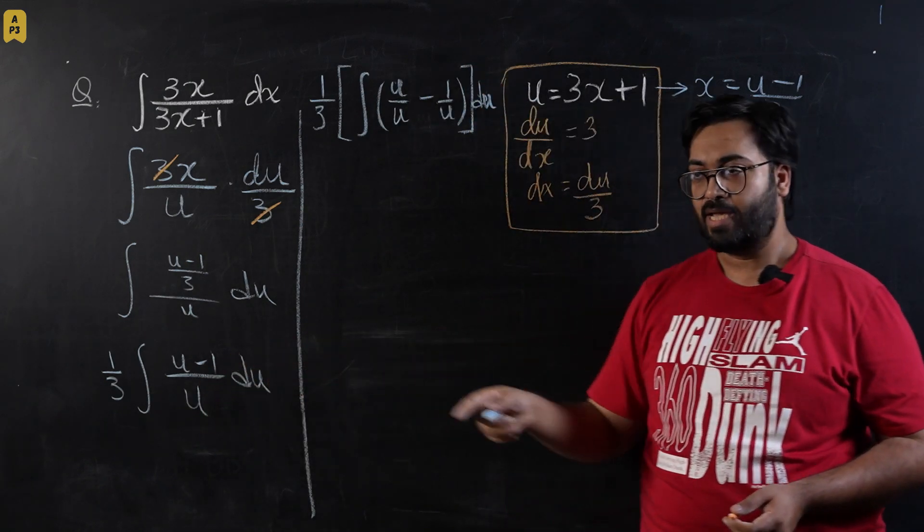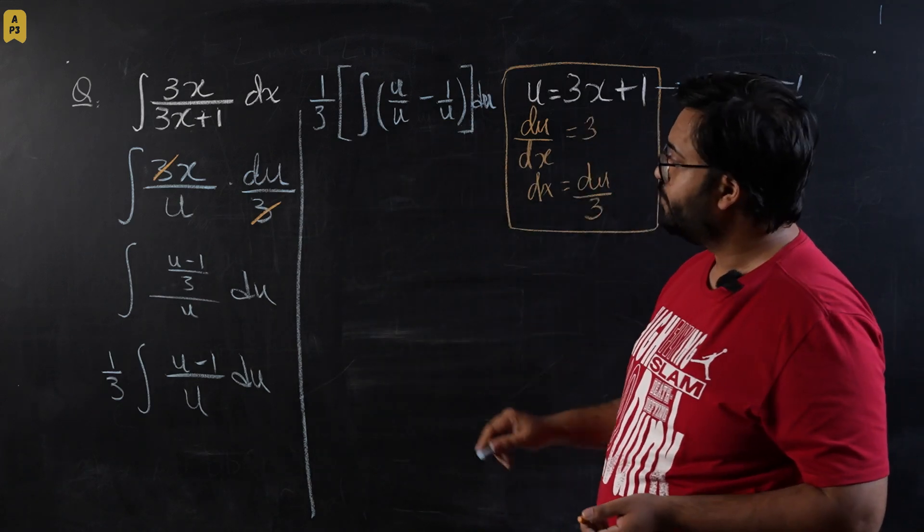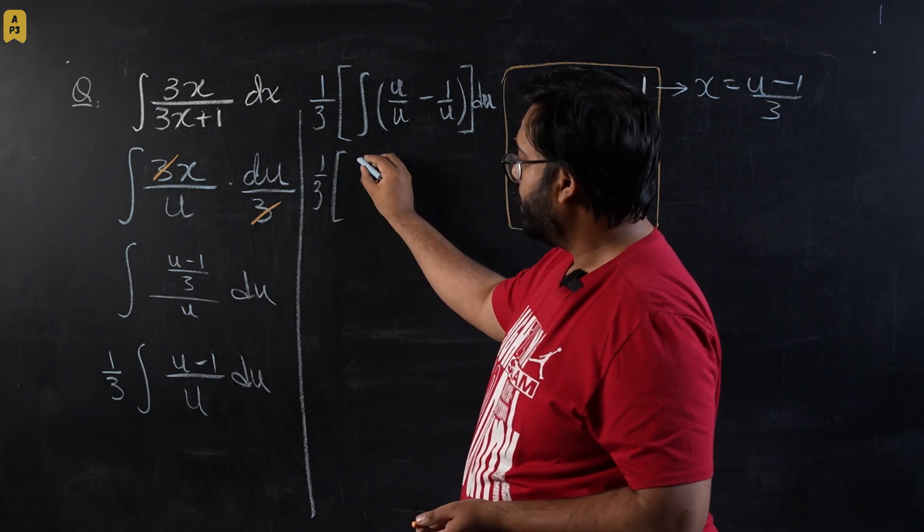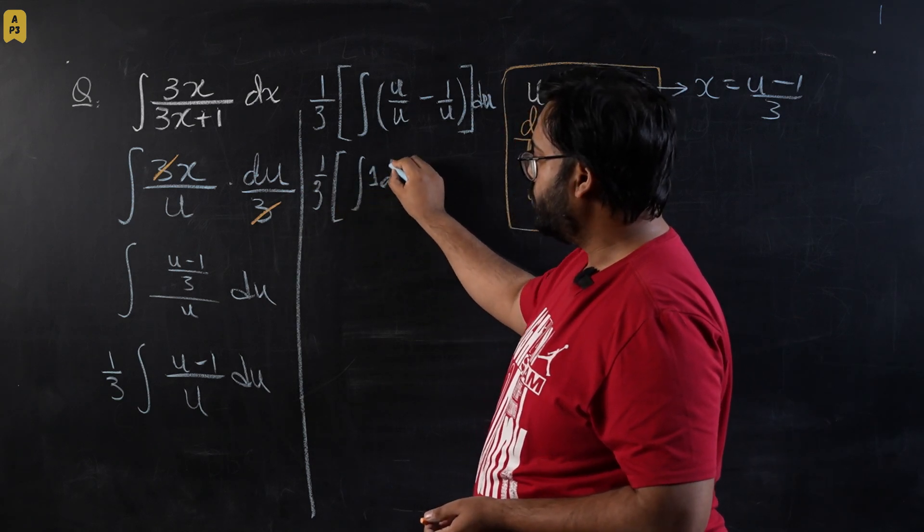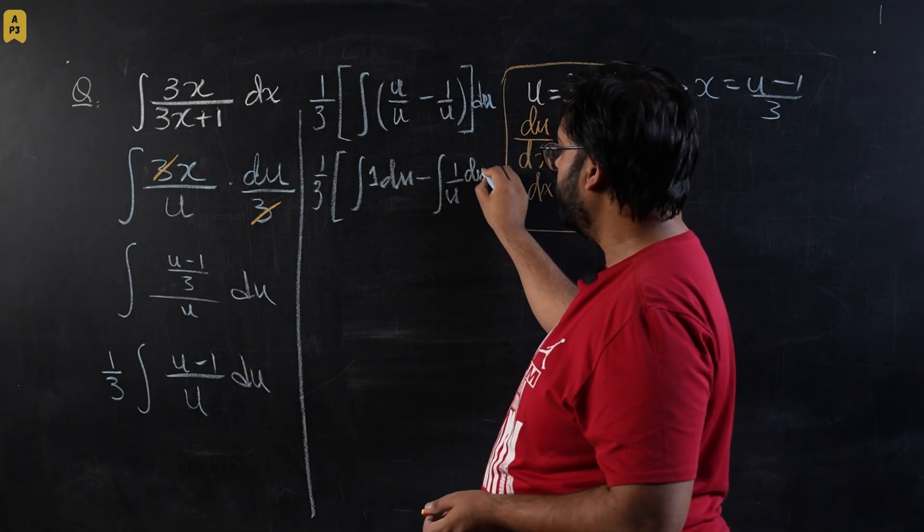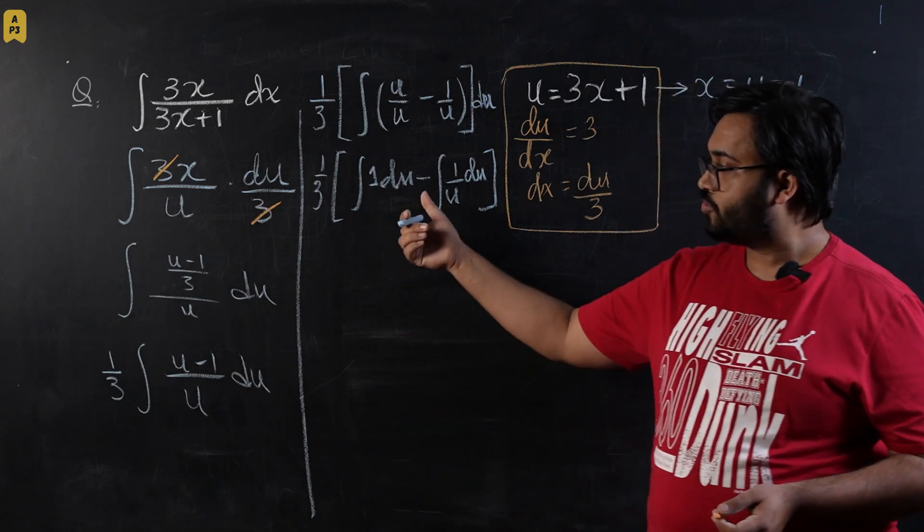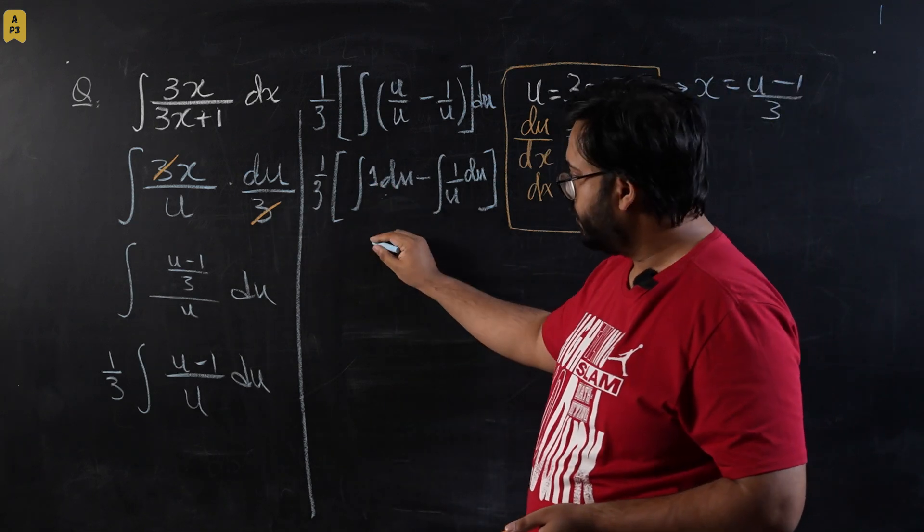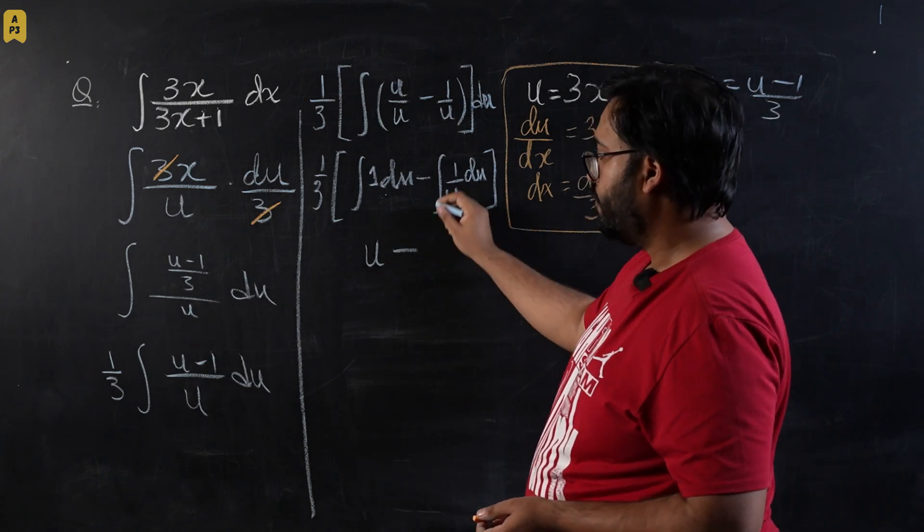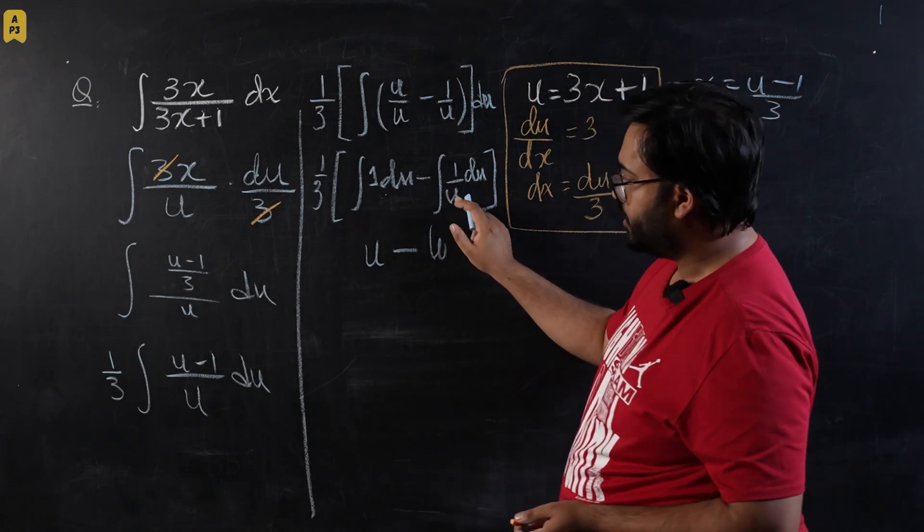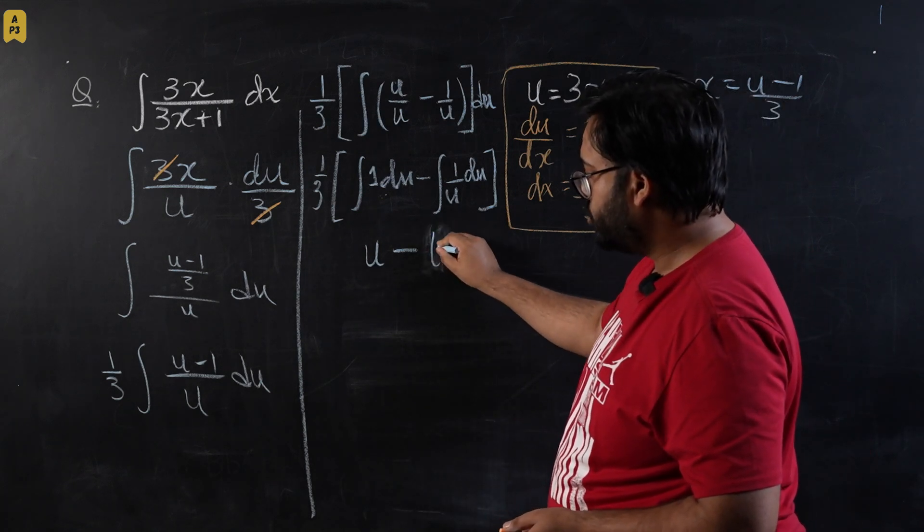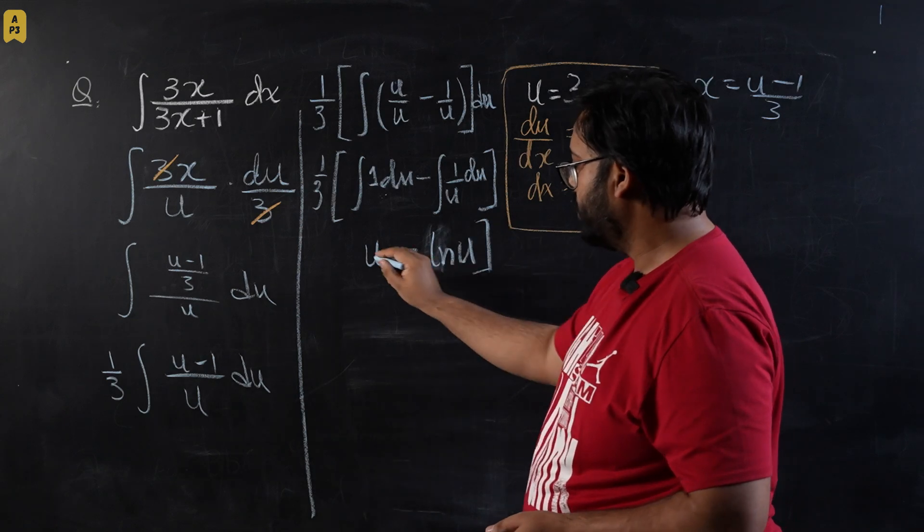So this will become 1 over 3 times, minus integral of 1 du minus integral of 1 over u du, square bracket closed. So the integral of 1 will become u eventually, minus integral of 1 over u will become log of u. As you can see, differentiation of the box is present in the numerator, so this will be natural log of u. And whole of this thing would be written as 1 over 3.